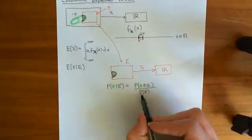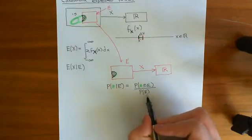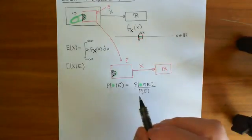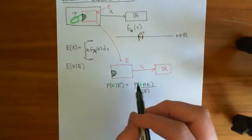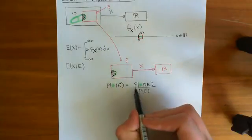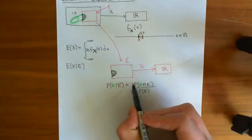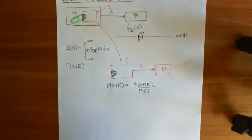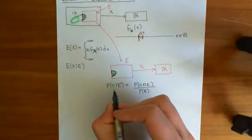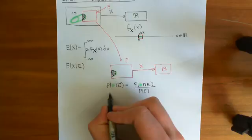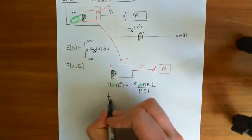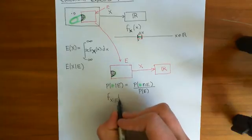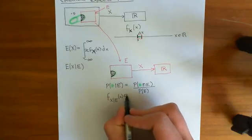And then we need to bump that up by dividing by the probability of the event e. So now we wanted to try and write this in terms of PDFs, but writing this thing here in terms of PDFs is actually quite difficult. What you would do is you would say that this is the PDF of x conditional on e having occurred as a function of little x times delta x.